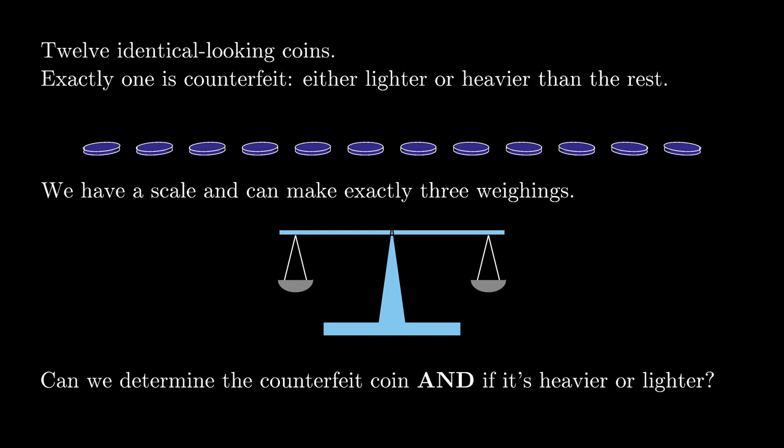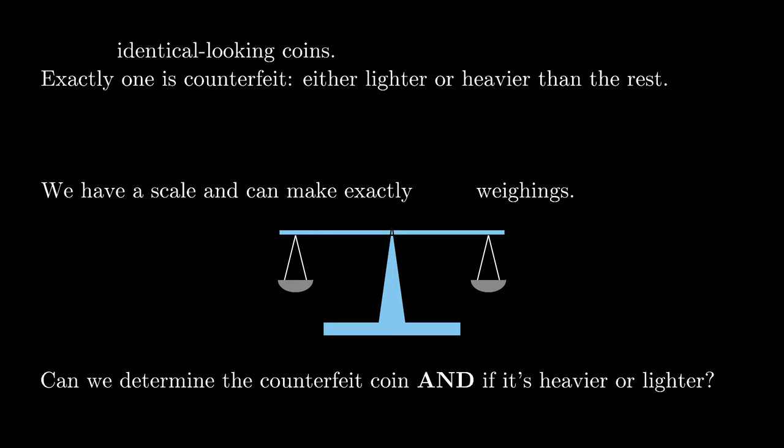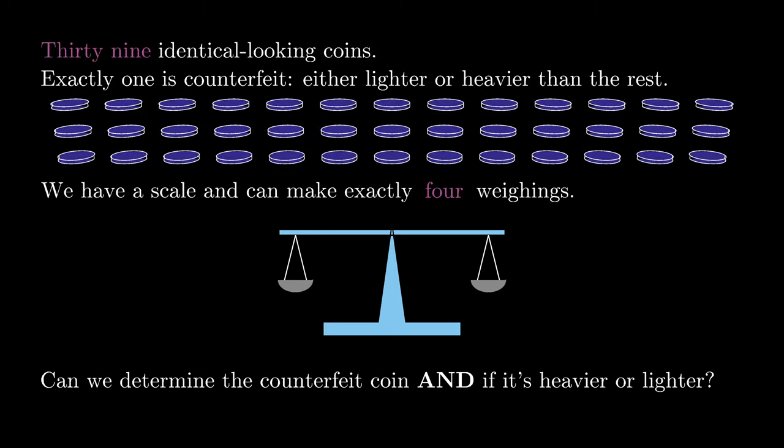Most solutions you can find for this weighing puzzle use logical reasoning only, and sometimes that involves breaking the situation into many cases, making the argument a little complicated to follow. Also, the logical solution doesn't scale up very well. What I really want to do is find a counterfeit coin — and whether it's heavier or lighter — amongst 39 identical looking coins, using only four weighings.